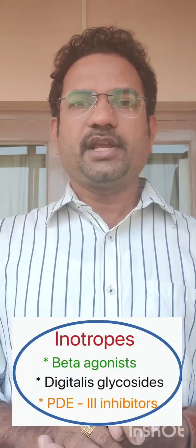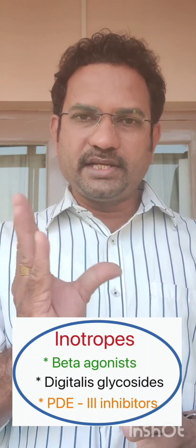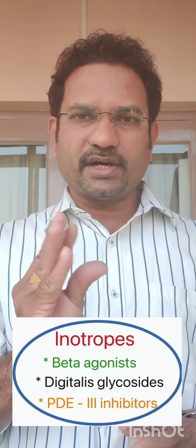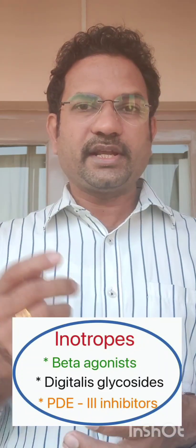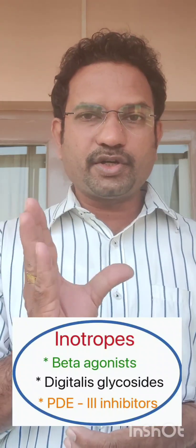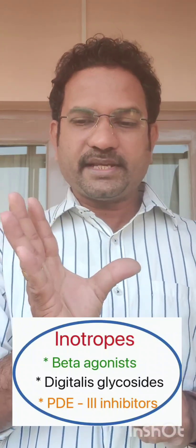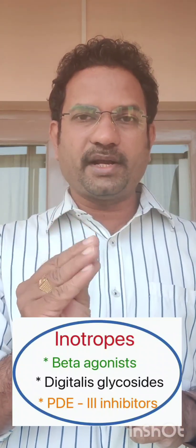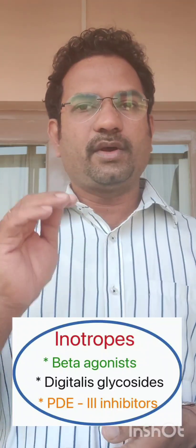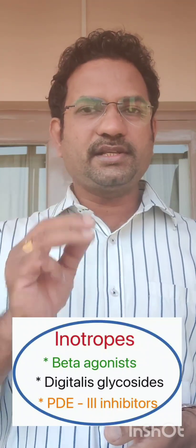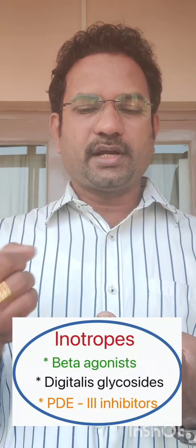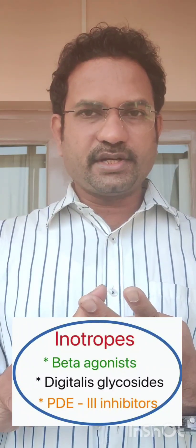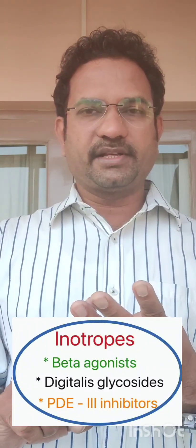Class 2 is known as inotropic agents. Inotropic effect means an increase in the force of contraction of the heart. The second problem in congestive heart failure is inability of the heart to pump blood, and inotropes increase the heart's ability to pump blood, addressing the problem. In this class, there are three subclasses: beta agonists, digitalis glycosides, and PDE3 inhibitors.